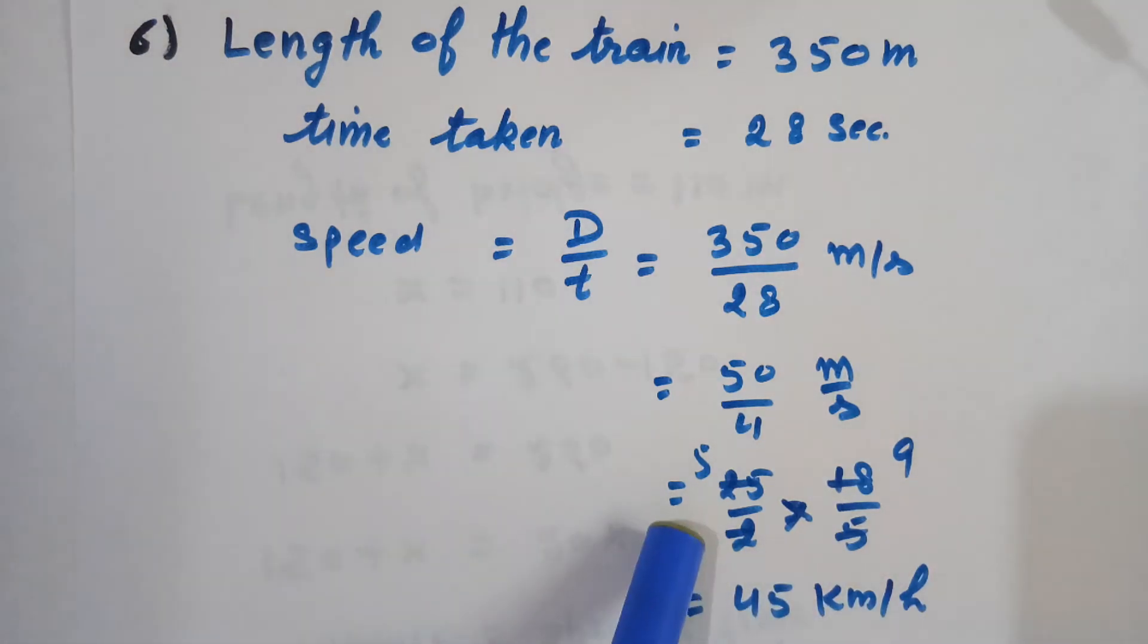Again we will reduce to the simplest form by dividing by 2. So 2 times 2 is 4 and 2 times 25 is 50.